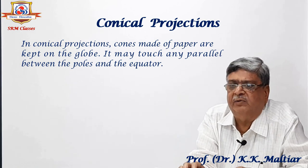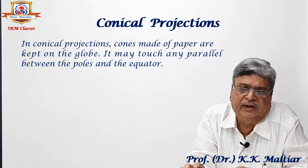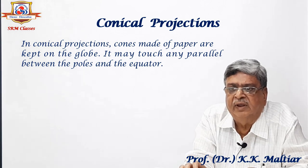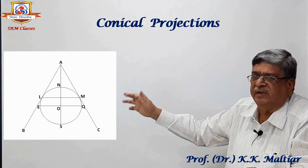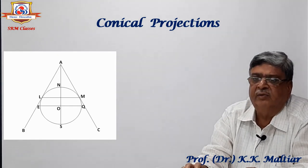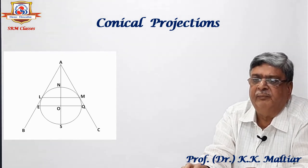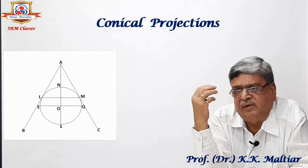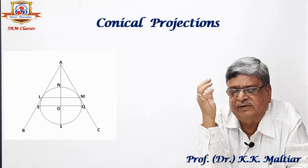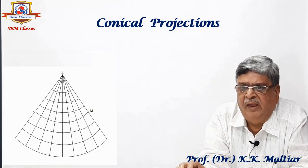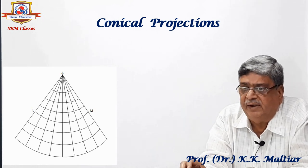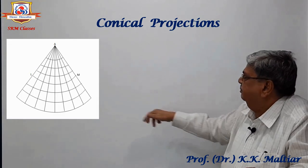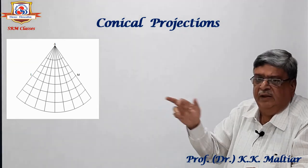Similarly, in conical projections, cones made of paper are kept on the globe and may touch any parallel between the poles and the equator. Here you can see the globe with center O and N as the north axis. The cone ABC has been kept over the globe, touching the LM parallel. The light has been kept at the center O, shadows are noted, and when the cone is unwrapped, it becomes a sector of a circle. The LM parallel is also shown in the unwrapped result. I will explain what the LM parallel is when we discuss the mathematical construction of this projection.